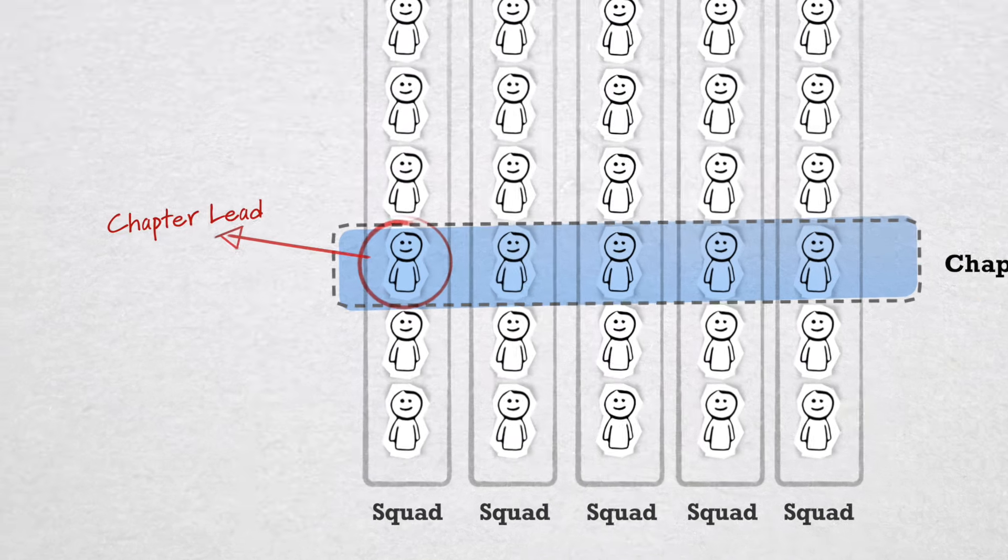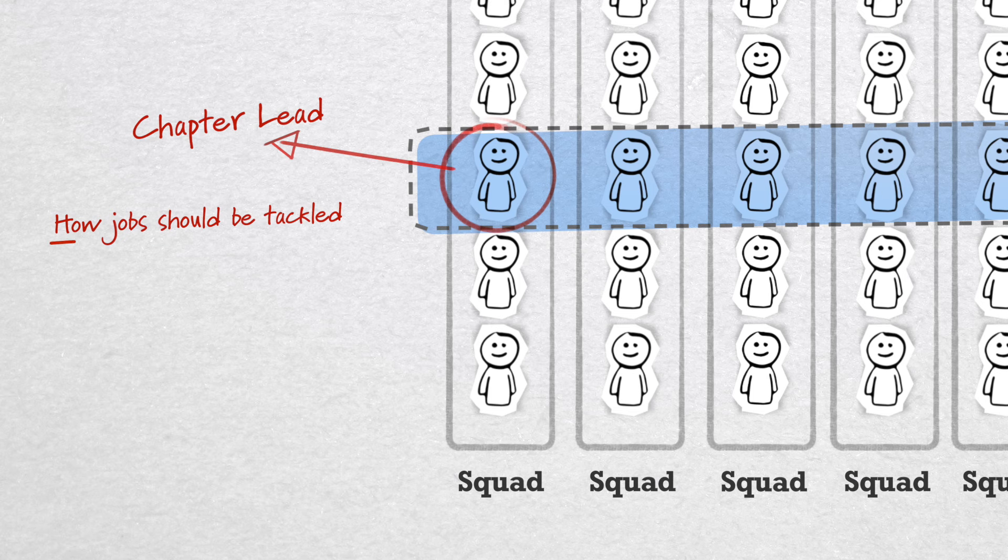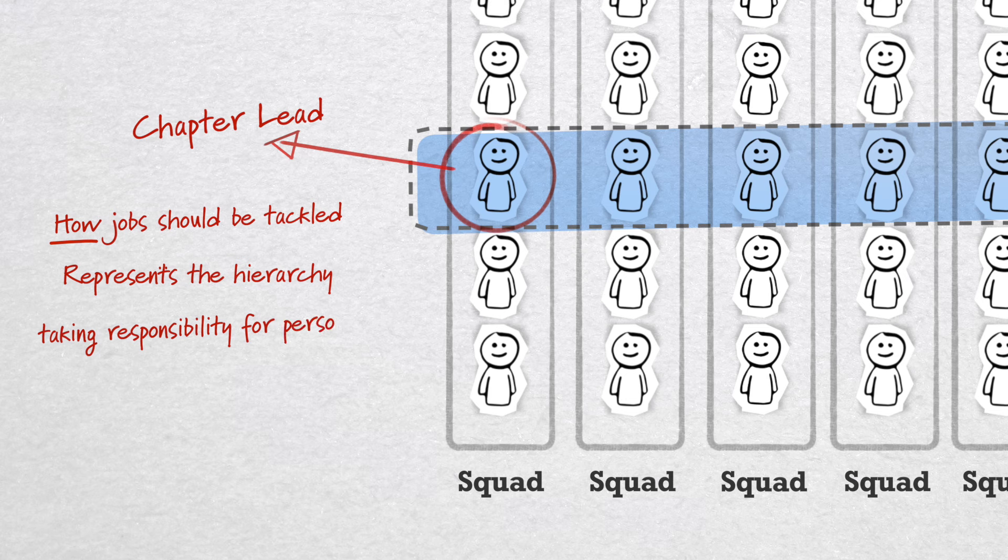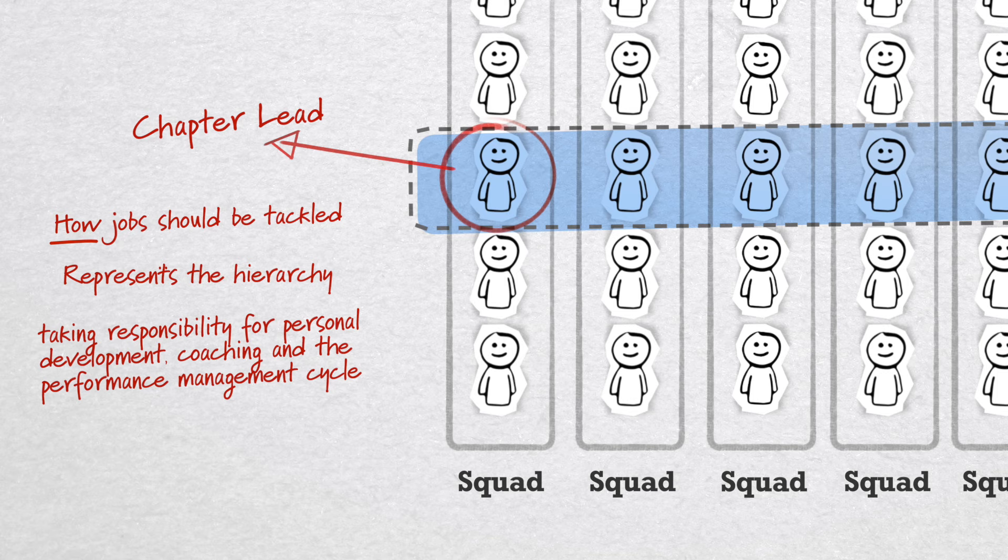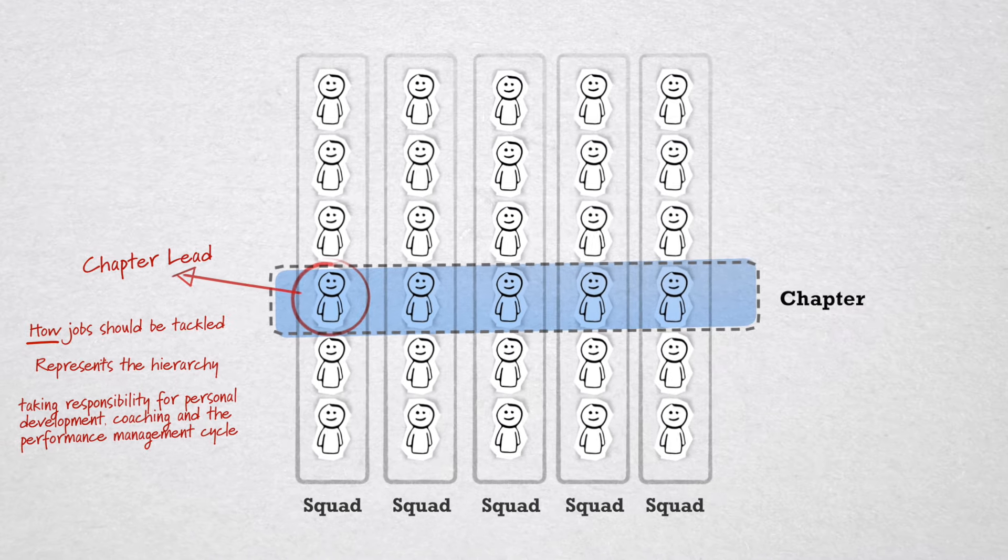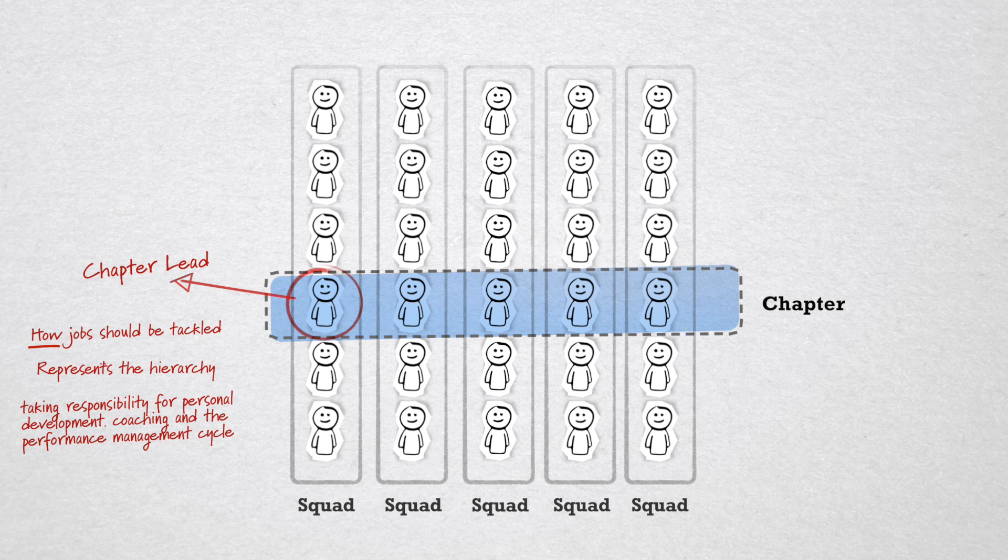The chapter lead is ultimately responsible for this and also represents the hierarchy for squad members, taking responsibility for personal development, coaching, and the performance management cycle of individual squad members. The chapter lead will perform these duties in addition to their regular day-to-day job in their own squad.